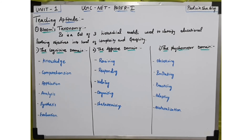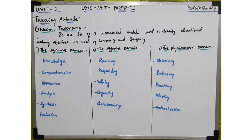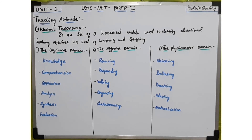The next level is imitating — it involves attempting to copy a physical behavior. Imitating means copying the behavior of another person. For example, in exams, copying behavior happens physically. It involves copying a physical action or behavior.